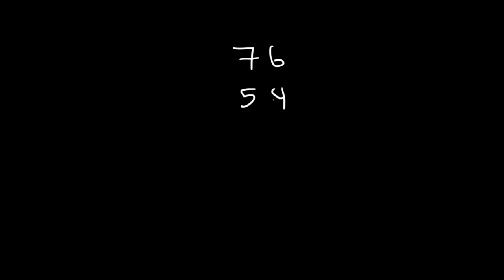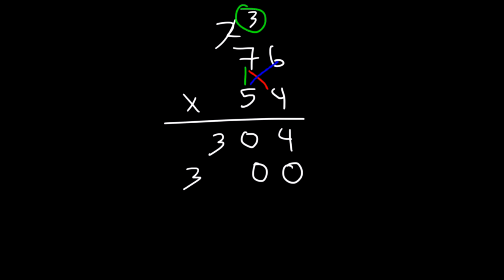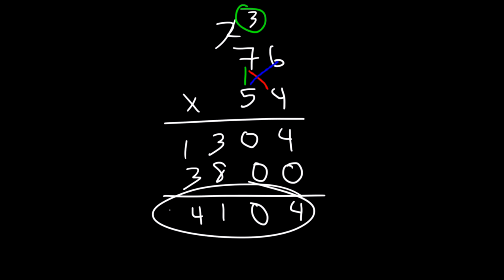Let's confirm by multiplying traditionally. 6 times 4 is 24, carry the 2. 7 times 4 is 28 plus 2, that's 30. Add a zero placeholder. 5 times 6 is 30, carry the 3. 5 times 7 is 35 plus 3, that's 38. Now add: 4 plus 0 is 4; 0 plus 0 is 0; 3 plus 8 is 11, carry the 1; 3 plus 1 is 4. We get the same answer: 4104.